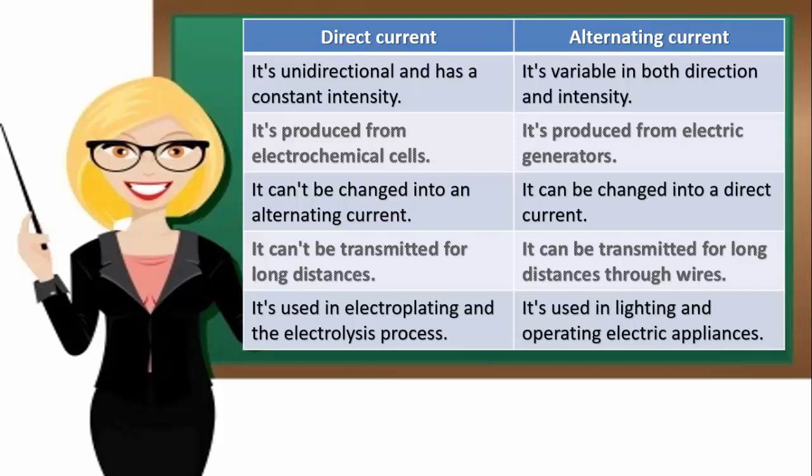Distance it can be transferred to: direct electric current can be transferred only to short distances. Alternating electric current can be transferred to short and long distances.